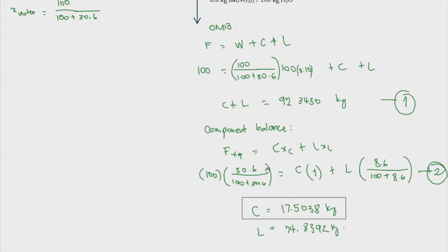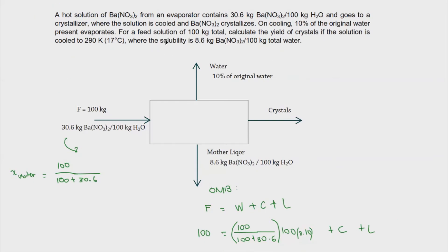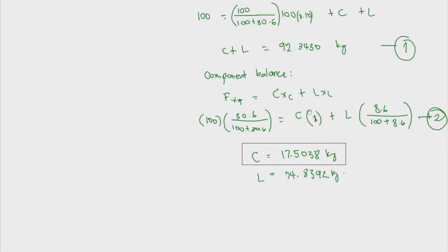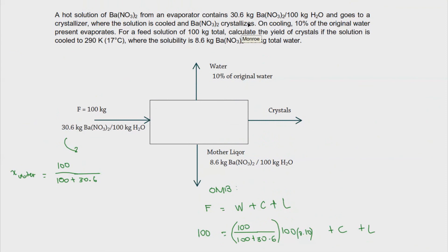And if the crystal is formed as barium nitrate itself, which is the same as the solute that is entering, then you will have X C, which is equal to 1. Now, if the crystal formed is something like hydrated or it is with hydrate, meaning it's hydrous, so you would be having something like X C not equal to 1 because the crystal formed is not actually the same as the solute in the feed.